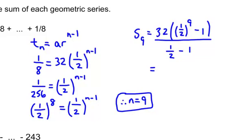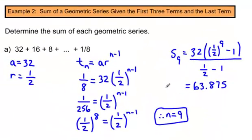Plugging everything in gives 63.875. Since the original question used fractions, I should express the answer as a fraction: 63.875 equals 511 over 8.